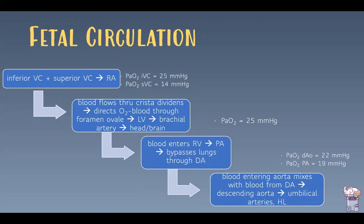The crista dividens directs oxygen-rich blood through the foramen ovale into the left atrium, then into the left ventricle, and out through the aorta and brachial artery directly to the head and brain — with a PaO2 of around 25 mmHg. The rest of the blood enters the right ventricle, goes into the pulmonary artery, bypasses the lungs through the ductus arteriosus, and enters the descending aorta, then flows to the umbilical arteries and hind limbs with a PaO2 of 19–22 mmHg.